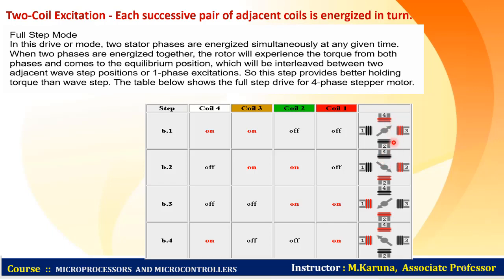To move the rotor to the next step, pulses are given to coils 2 and 3. Then coils 1 and 4 are on. The rotor rotates stepwise according to the current pulses given to the stator. This is called full step mode.